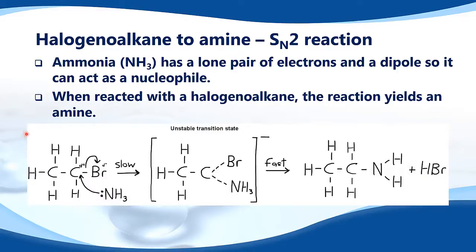Here we have the mechanism for the SN2 reaction. We have a primary halogeno alkane, which is bromoethane. We have ammonia acting as the nucleophile, and just like in the previous SN2 reactions we've looked at, we get an unstable transition state where both the bromine and the ammonia are attached to the carbon, and then you end up with an amine.